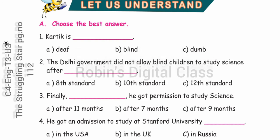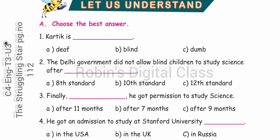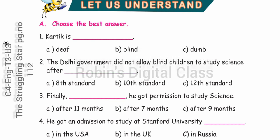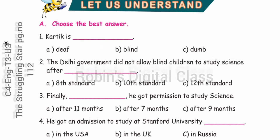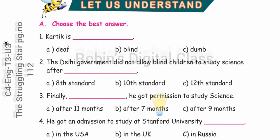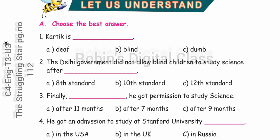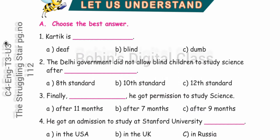Question number three: Finally, dash, he got permission to study science — option C — after nine months. Question number four: He got an admission to study at Stanford University in the USA.